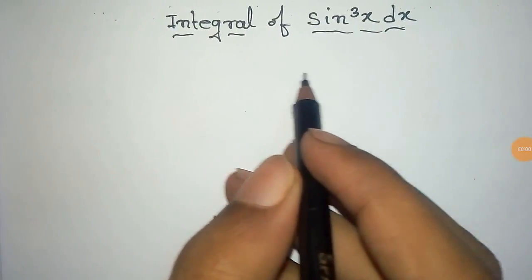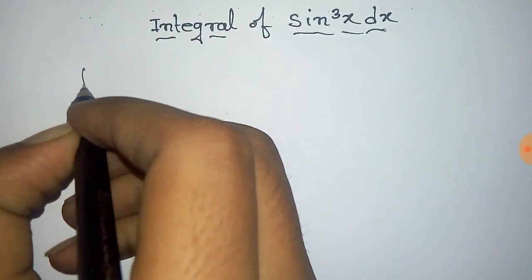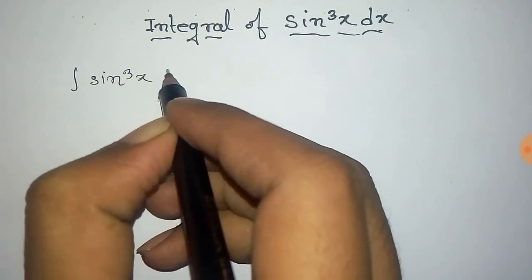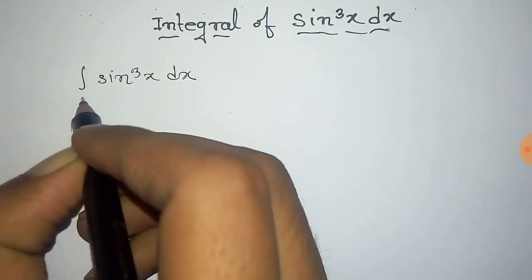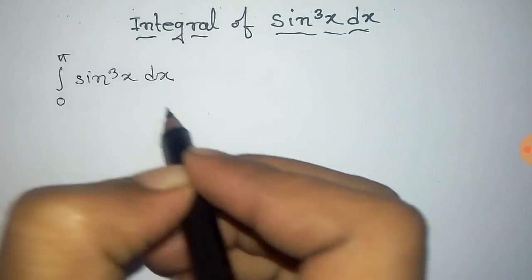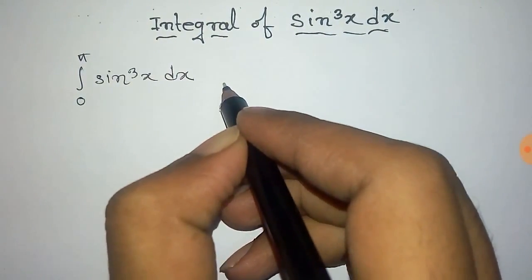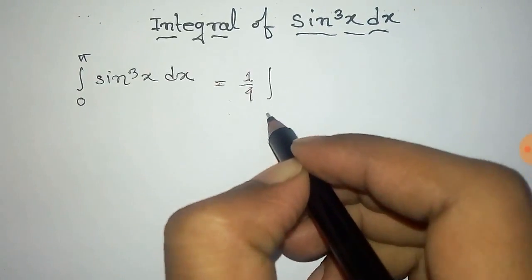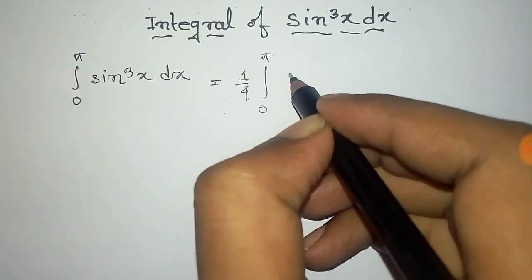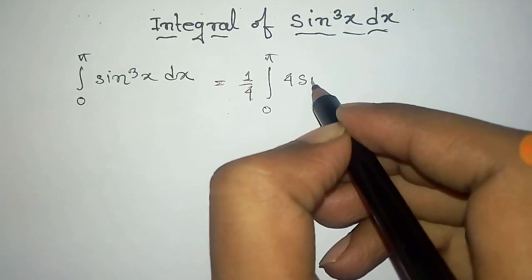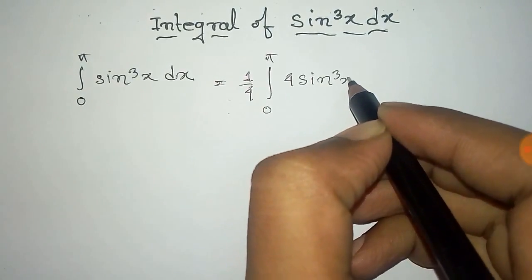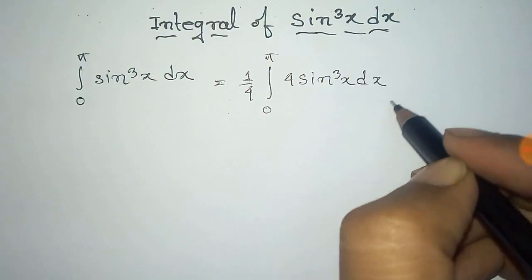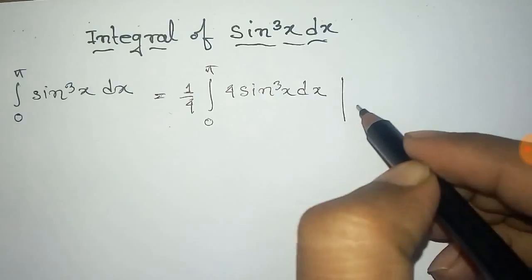We have to find the integral of sin³(x) dx within the limit zero to pi. For this, we take one-fourth common, so it will be one-fourth times the integral from zero to pi of 4 sin³(x) dx.